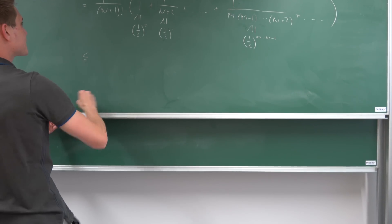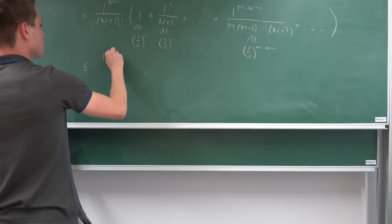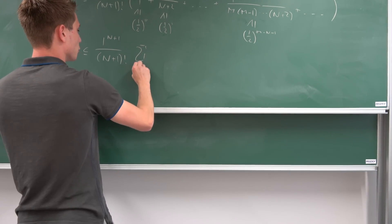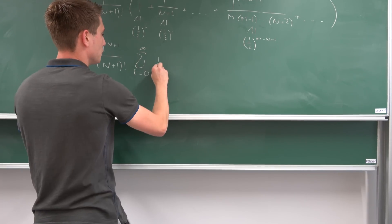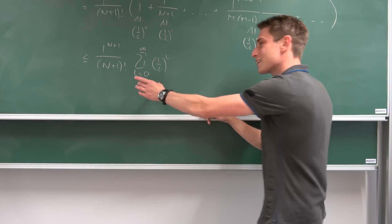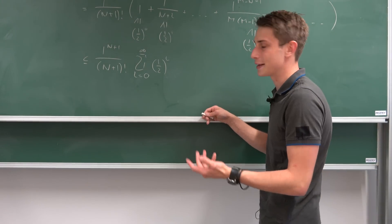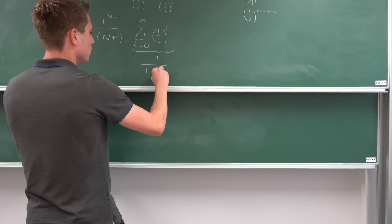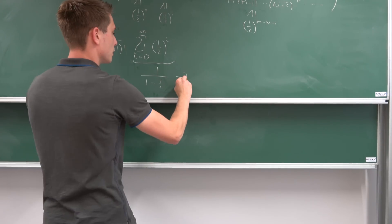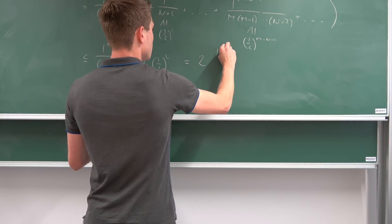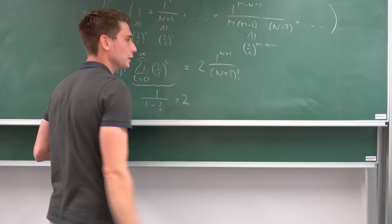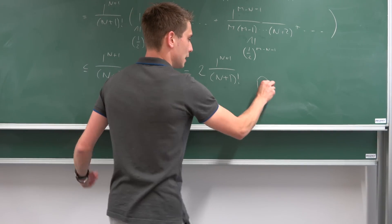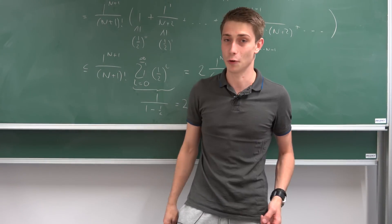So we can plug this estimation in. At first we have one to the n plus one power over n plus one factorial, and also we have this infinite series from l equals zero to infinity of one half to the lth power. But we know exactly what this is: since one half is strictly less than one — so it's between zero and one — this thing actually converges. That's a geometric series, and this is just one over one minus one half, which is one over one half, which is two. So what we end up with is just two times one to the n plus one power over n plus one factorial. And that's indeed what we wanted to show — the tail of one is less or equal to that. Let's place a black box here and get started with the real proof of the irrationality of e.